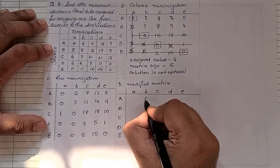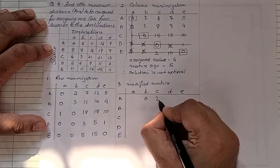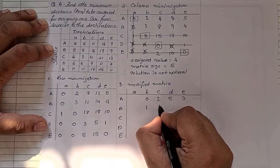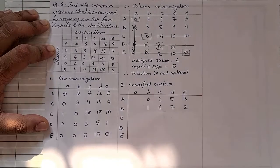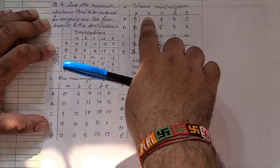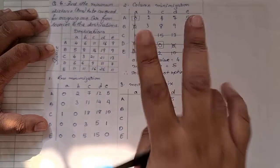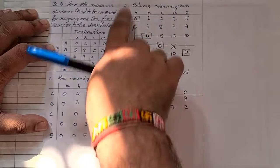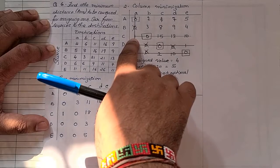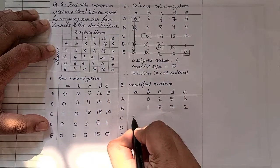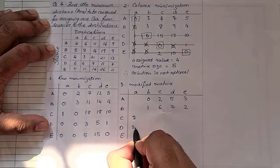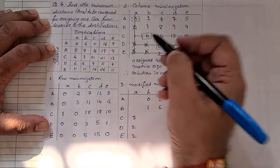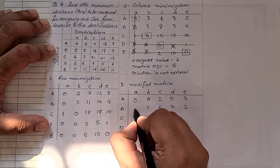Rule number one: take the lowest value and subtract from all unmarked cells. Second rule: add that lowest value to all intersecting points of the lines. The intersecting point that was one becomes one plus two equals three; zero plus two becomes two; and again zero plus two becomes two. Wherever the lines intersect, that point gets added by two. All remaining values stay as they are.